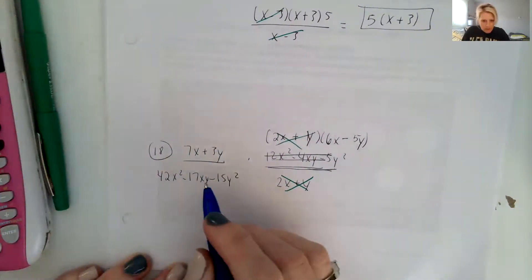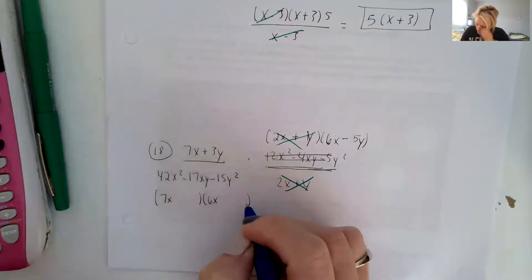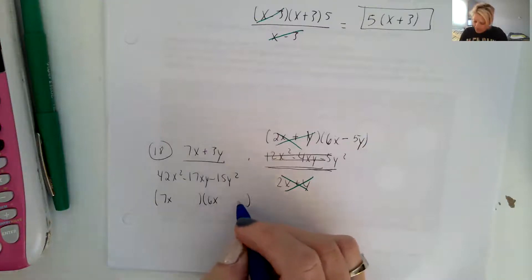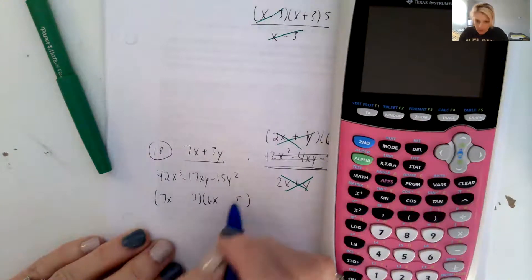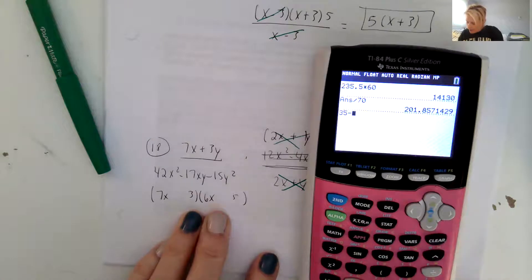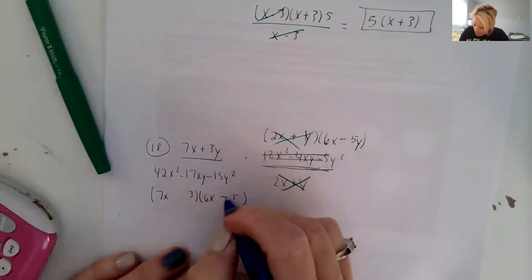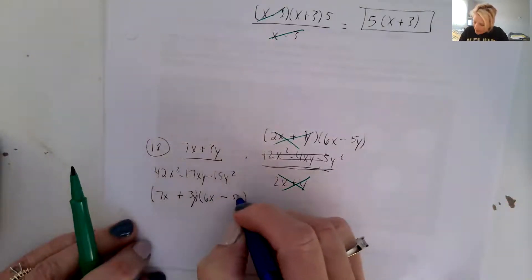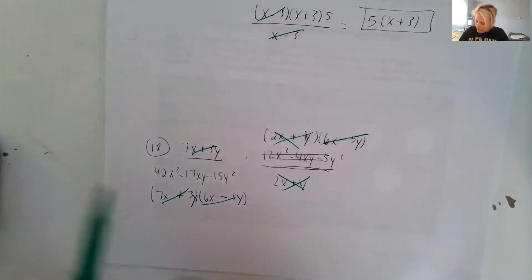Let's see what this 42x squared factors into. 42 is usually a 7 and a 6, and 15 is a 5 and a 3. So if we do 3 and a 5 here — 5 times 7 is 35, and we need a difference, so subtracting 3 times 6 is 18 — we get 17. So we need the 35 to be negative. And that's 7x plus 3y and 6x minus 5y, and they all cancel. And that simplifies to 1. So it's really a lot of factoring is all.